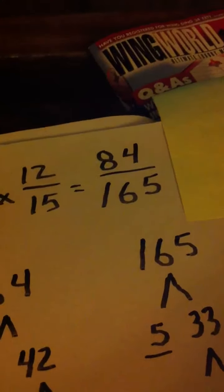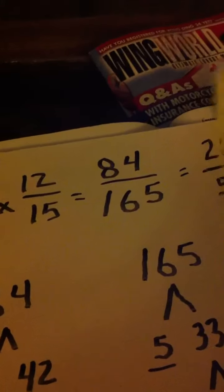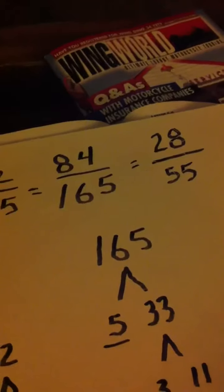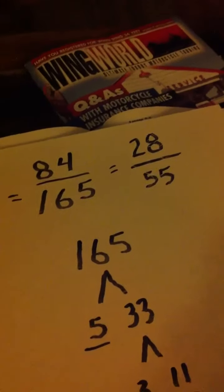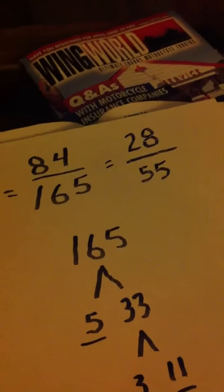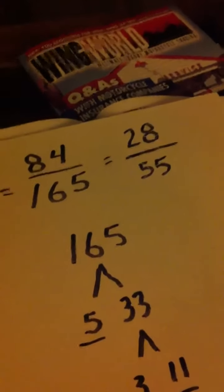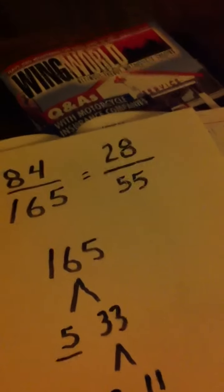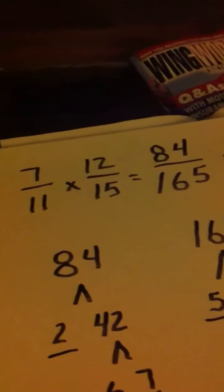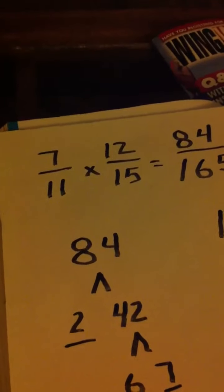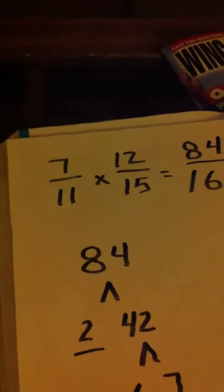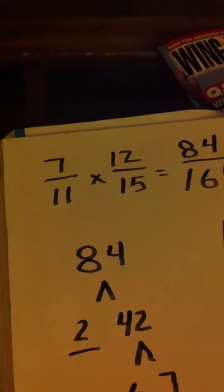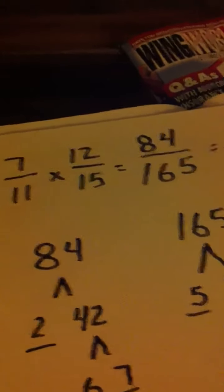If 3 was the magic number, 3 will go into 84 28 times and 3 will go into 165 55 times. Some of you may have already caught that and figured it out but I thought it was pretty cool because it goes against what we've been saying to do that if you cross simplify and if it doesn't simplify then you're good to multiply straight across and you have your answer.